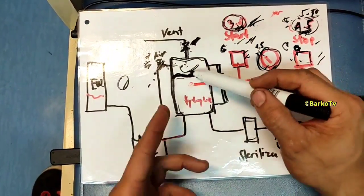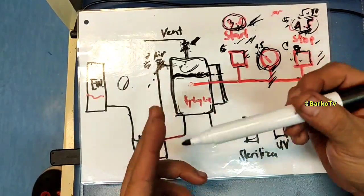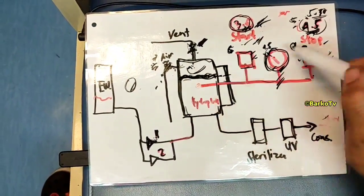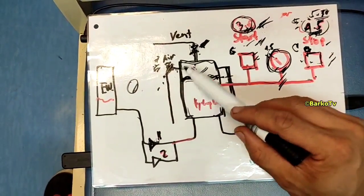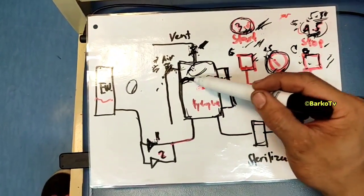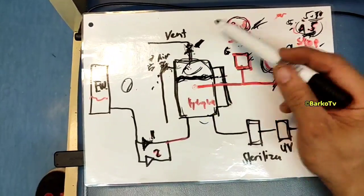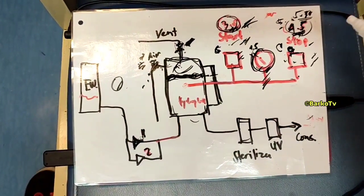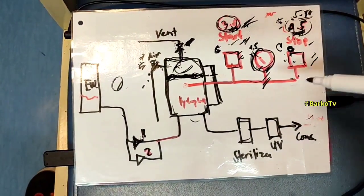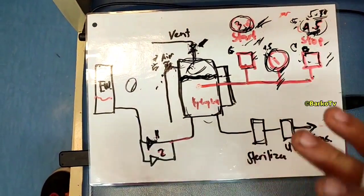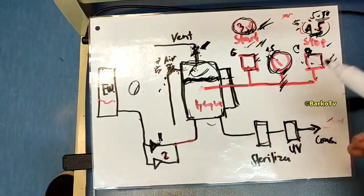After setting, follow the proper procedure: maintain three-quarters water without pressure, then charge air up to 4.5 bar so the hydrophore maintains three-quarters water level. That is the simulation method I used, and it worked for me easily.